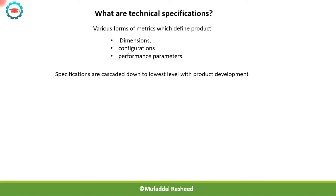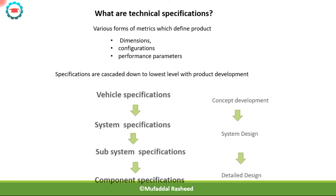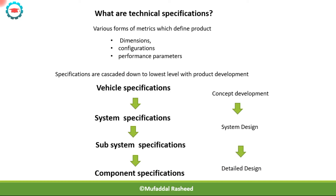These specifications are then cascaded down to the lowest level as the product development progresses. The vehicle specifications get cascaded down to system specifications, then to subsystem specifications, and then to component specifications. During the concept development phase, the preliminary vehicle specifications are created. As system design starts, system specifications are generated, and during the detail design phase, the component specifications are established.